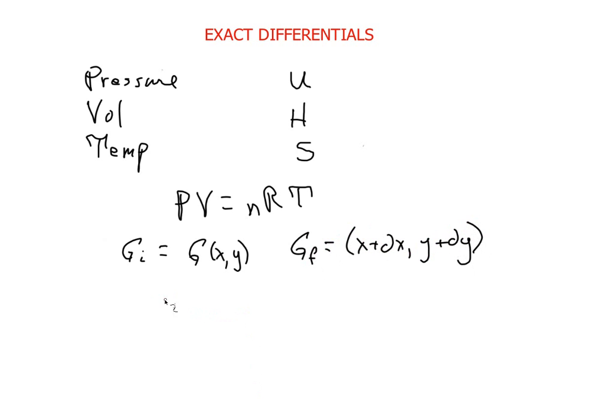From a math viewpoint, we can write a total differential. So we can say dg equals the partial of g over partial of x dx plus partial of g over the partial of y dy. We'll call that equation one.